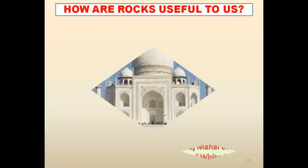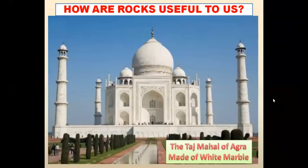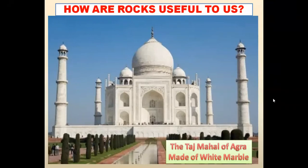How are rocks useful to us? What type of image can you see on your screen? That is the image of the Taj Mahal of Agra. The Taj Mahal has been made with white marble — that is also one of the uses of rock. It is one of the Seven Wonders of the World that we are having in our country India. Taj Mahal is one of the examples of how rocks can be most useful.